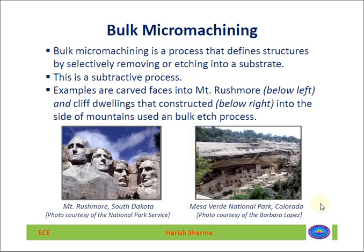Bulk micro machining is a process that defines the structure by selectively removing or etching into a substrate. In case of surface micro machining, the components are built over the top of the surface — that's an additive process. Bulk micro machining is a removing or etching process; it's a subtractive process.